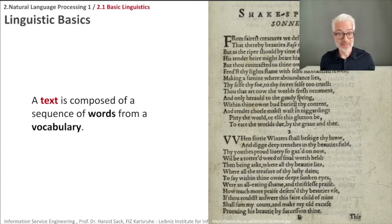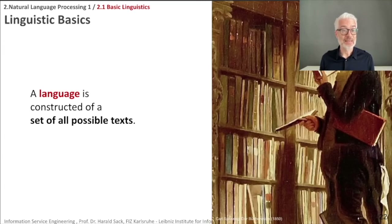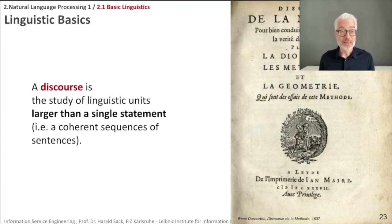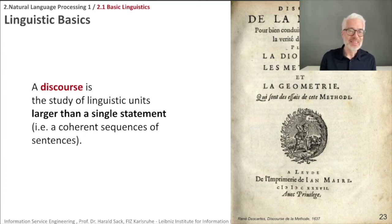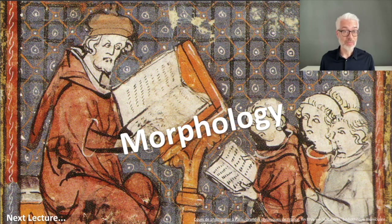If we look at the set of all possible texts and collect all of the words used there, we arrive at a language — which means this is the set of all possible texts. The last term to introduce here in this short section on basic linguistics is discourse. Discourse usually refers to the study of linguistic units larger than a single statement — meaning you look at an entire paragraph, a coherent sequence of sentences, or even an entire page or chapter of a document. The analysis of that is referred to as discourse. In the next section of the lecture, we will talk about morphology.